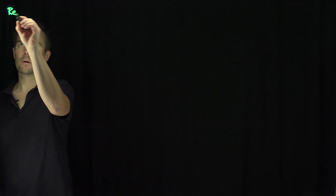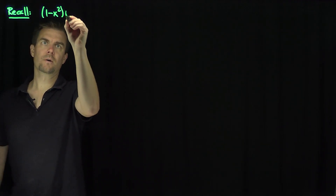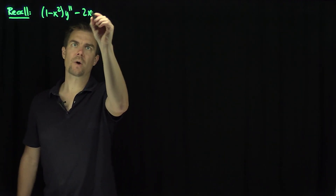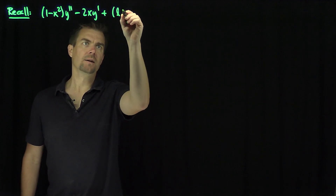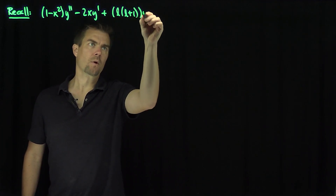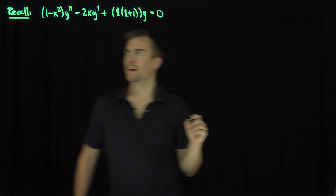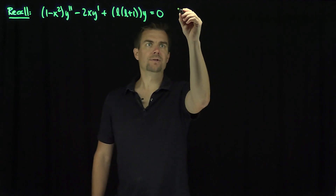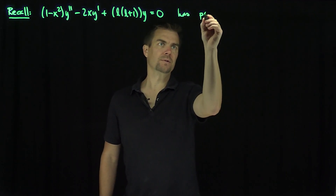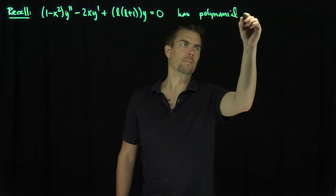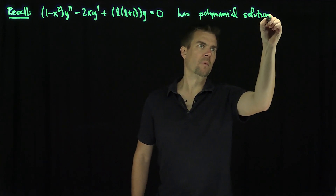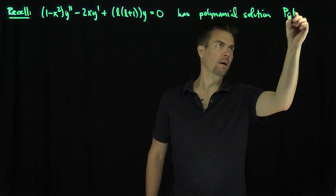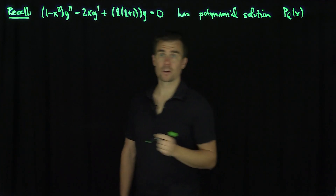Hello, students. In this video, we'll consider the associated Legendre equation. Let's recall that (1 - x²)y'' - 2xy' + l(l+1)y = 0 is Legendre's equation, and it has polynomial solutions P_l(x), the l-th Legendre polynomial.